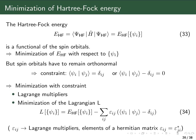We are going to do the minimization of the Hartree-Fock energy by this functional variation which we discussed in the last lecture. But there is also an additional constraint: we want the spin orbitals to remain orthonormal, which means we have the constraint that the overlap integral of two spin orbitals i and j is going to be equal to the Kronecker delta δ_ij. This means if i equals j the integral is one, and if i and j are different the overlap integral is zero so they are orthogonal.